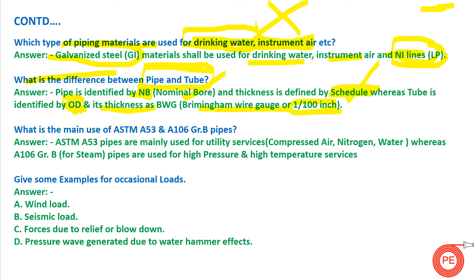What is the difference between ASTM A53 and A106 Grade B pipe? ASTM A53 pipes are used for utility services like compressed air, nitrogen, and service water. ASTM A106 Grade B is used for steam or high pressure and high temperature services. A106 seamless pipes are made for high temperature and high pressure applications. This is the main difference between ASTM A53 and ASTM A106 Grade B pipes.